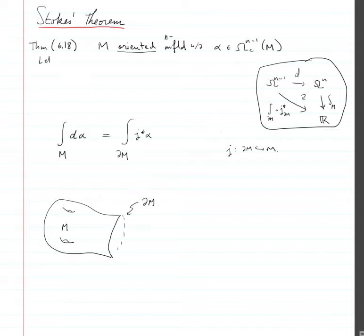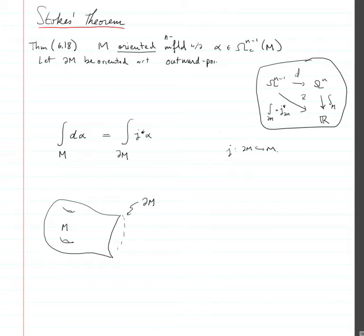And let the boundary of m be oriented with respect to an outward pointing vector field. And then we have this formula.